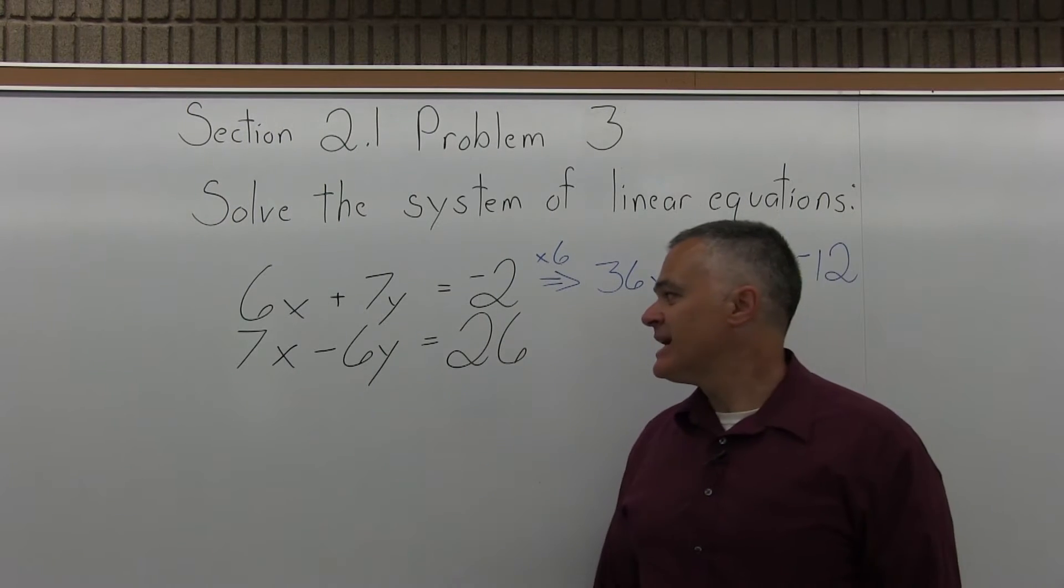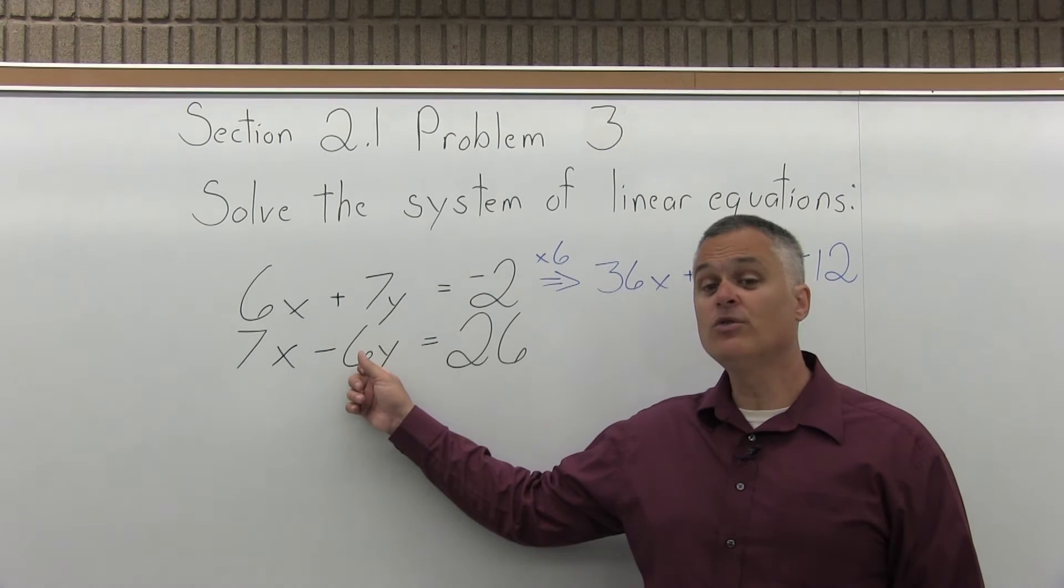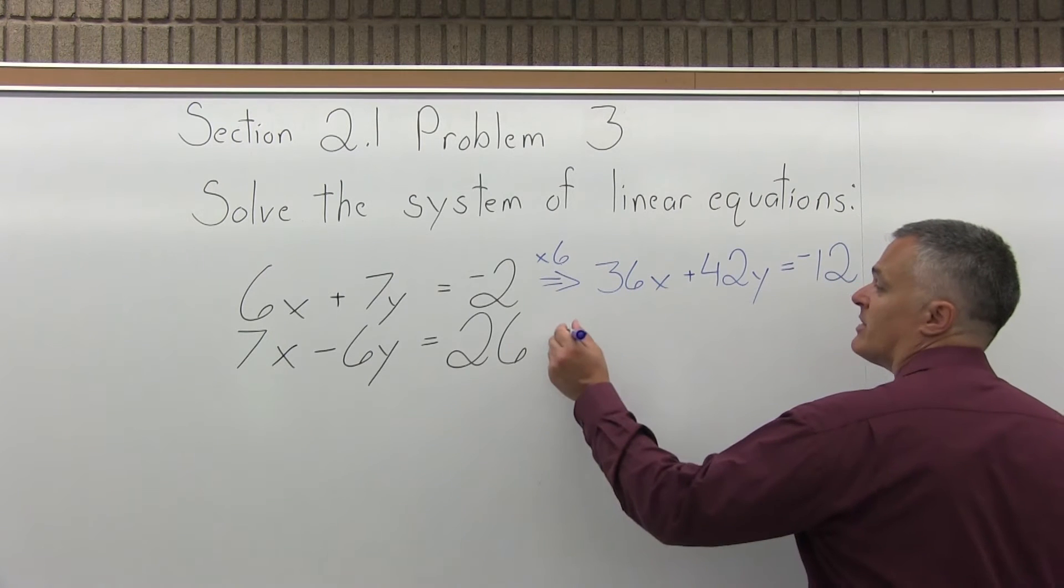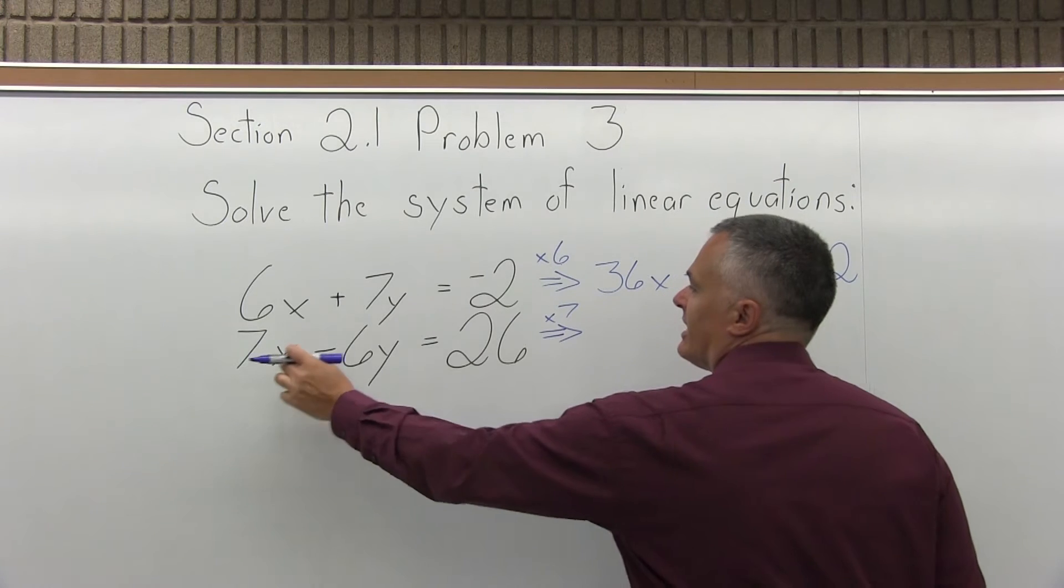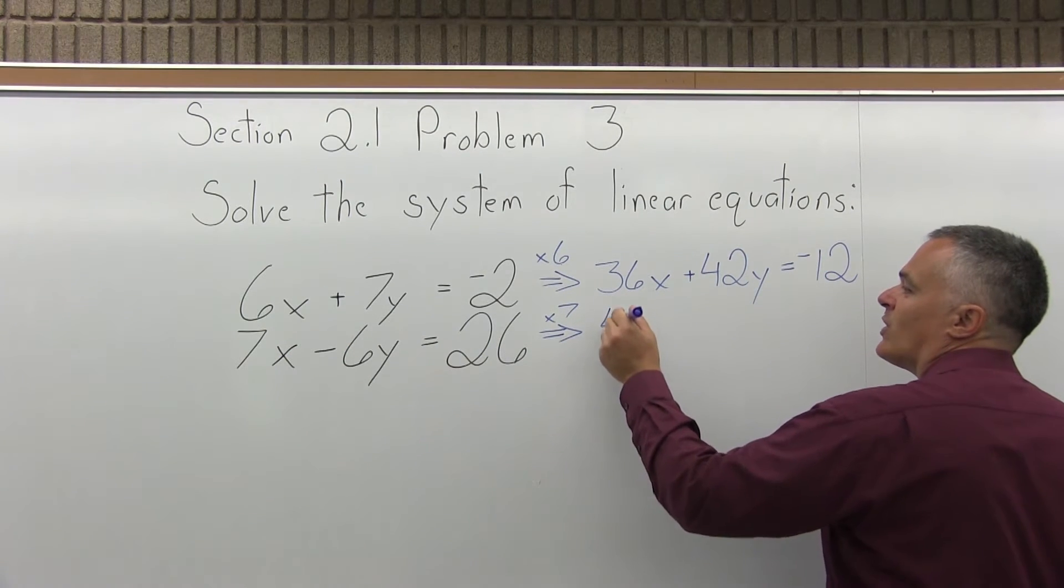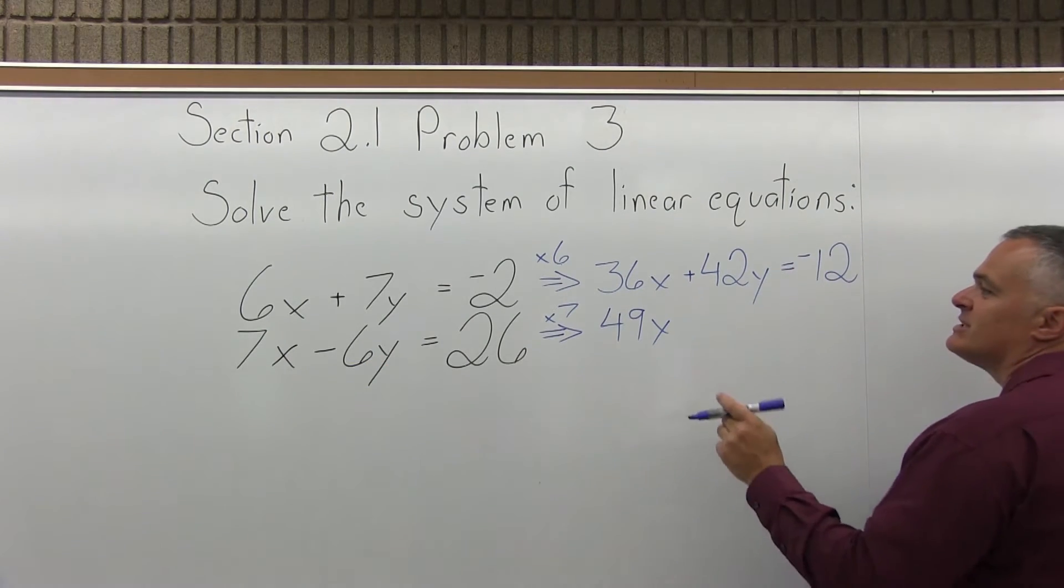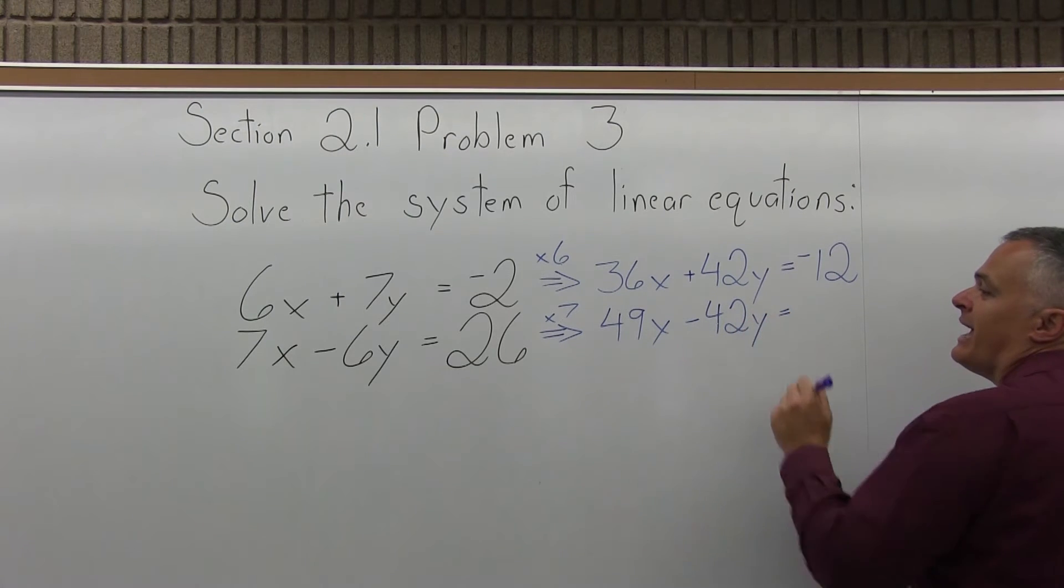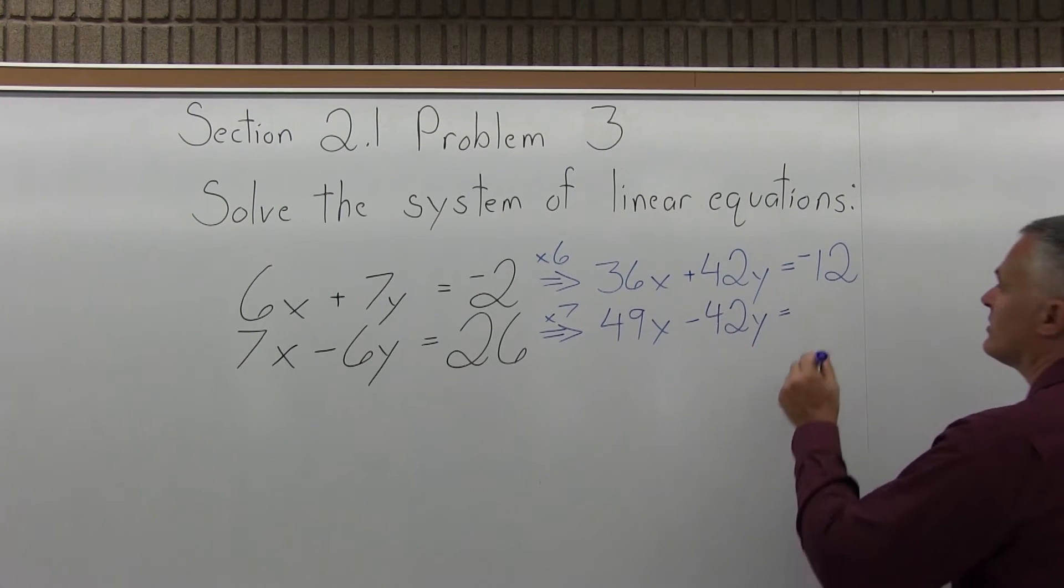Now, the bottom equation has a negative 6y. I'd like to make it a negative 42y. So, everything will have to get multiplied times 7. The bottom equation, everything times 7. 7 times 7x is 49x. 7 times negative 6y will be negative 42y. And then 7 times 26 should be 182.